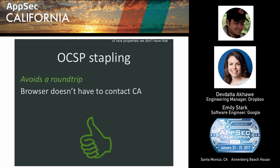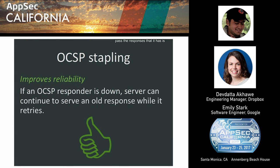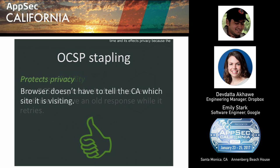OCSP stapling has a number of nice properties. We don't have a round trip in the critical path — the server queries periodically and caches responses. It improves reliability in the sense that the CA is no longer in the critical path on every handshake. It reduces traffic on the CA because the server queries once and serves that response to many clients. And it protects privacy because the browser does not contact the CA as part of connection setup.